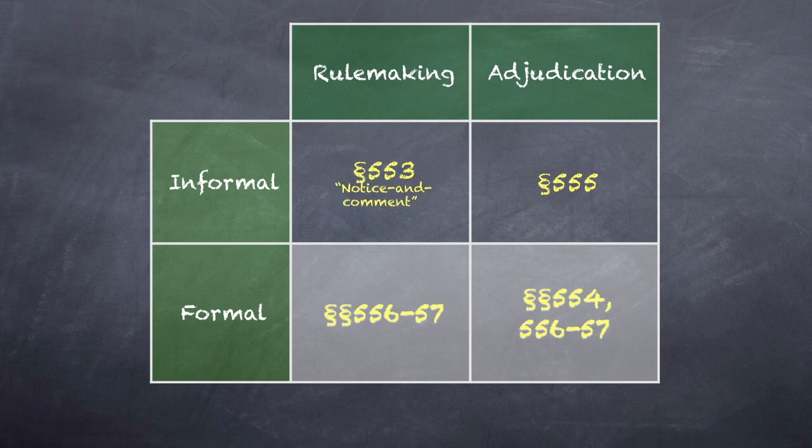The universe of agency actions is divided into two types: rulemakings and adjudications. Every agency action is one or the other. The two distinctions — formal versus informal, and rulemaking versus adjudication — cut across each other.